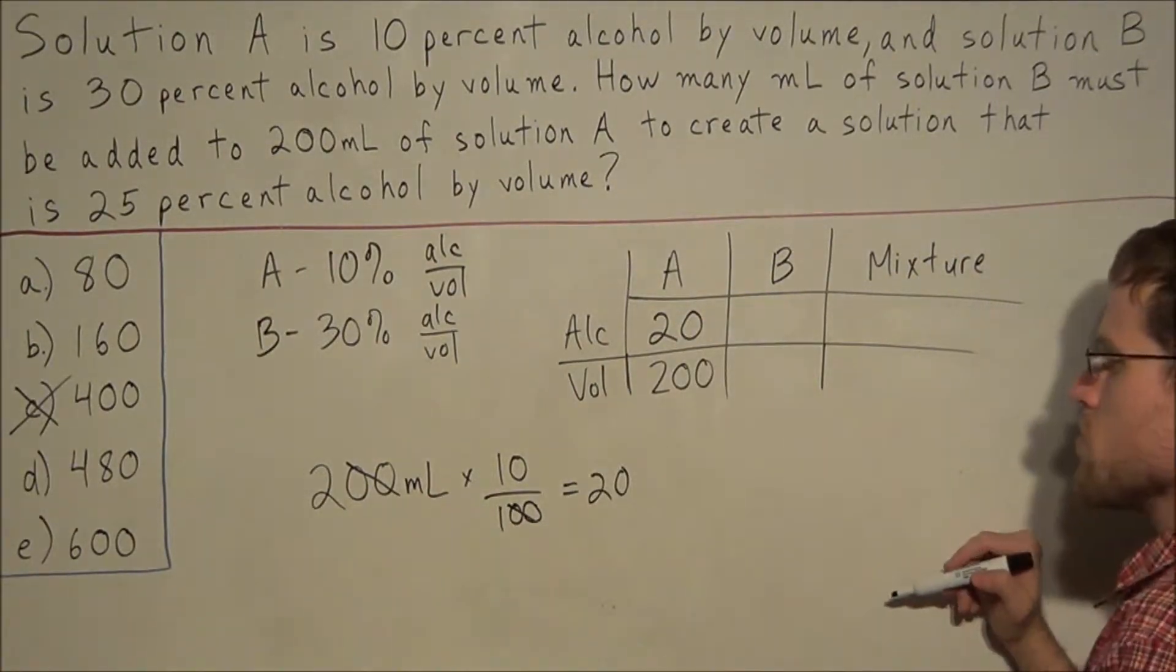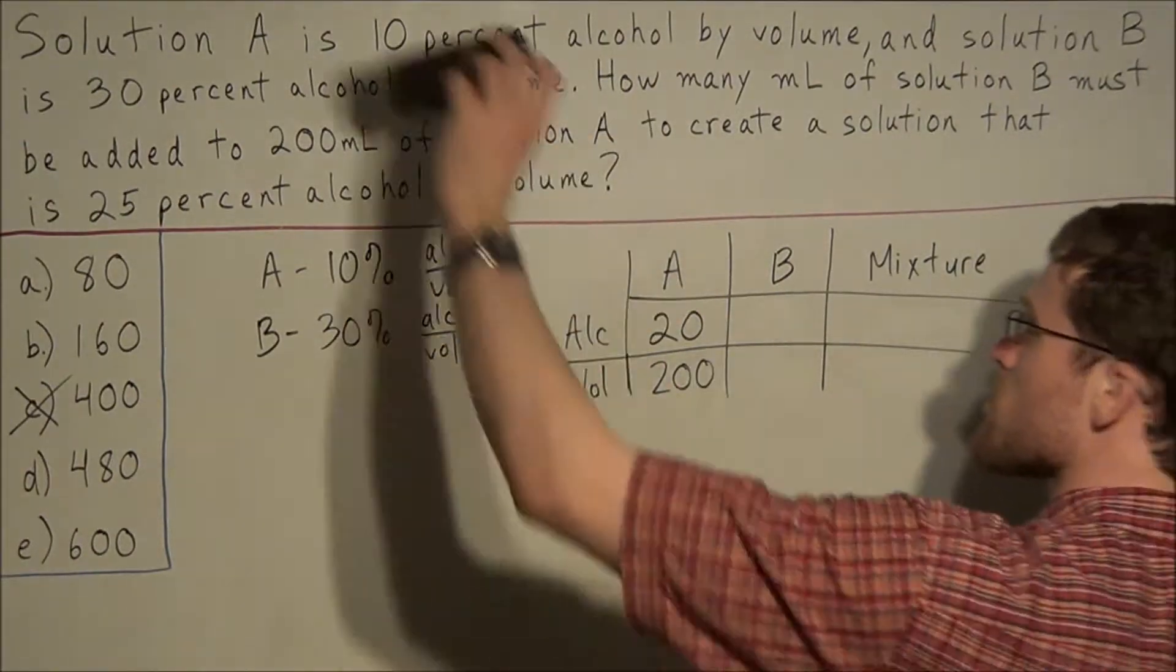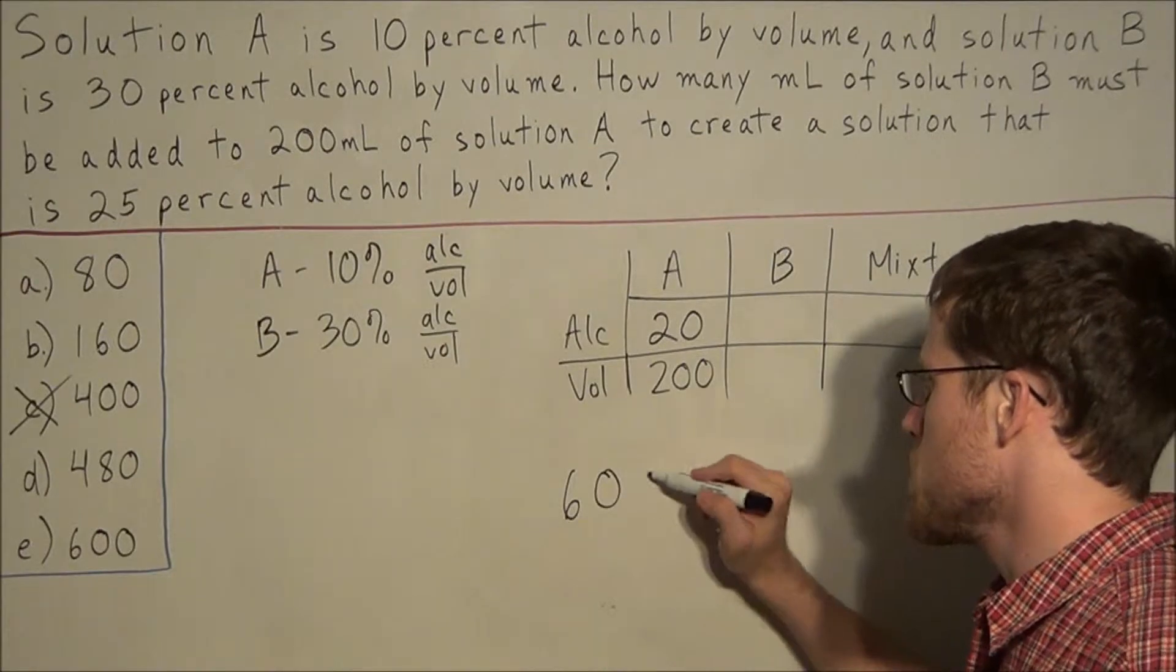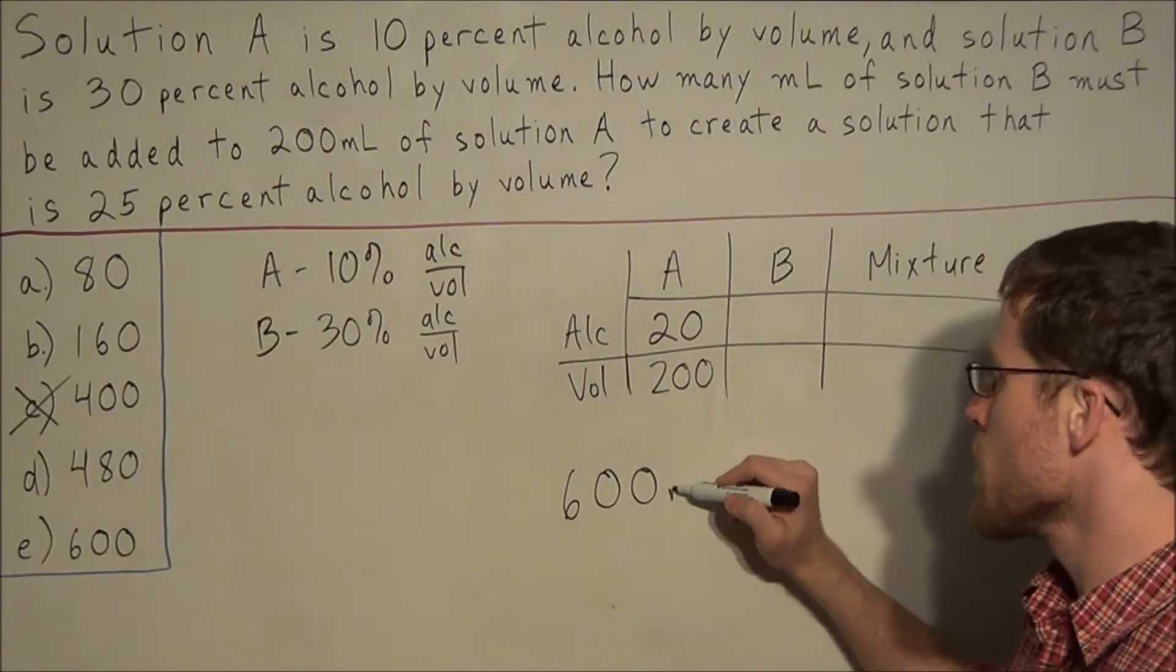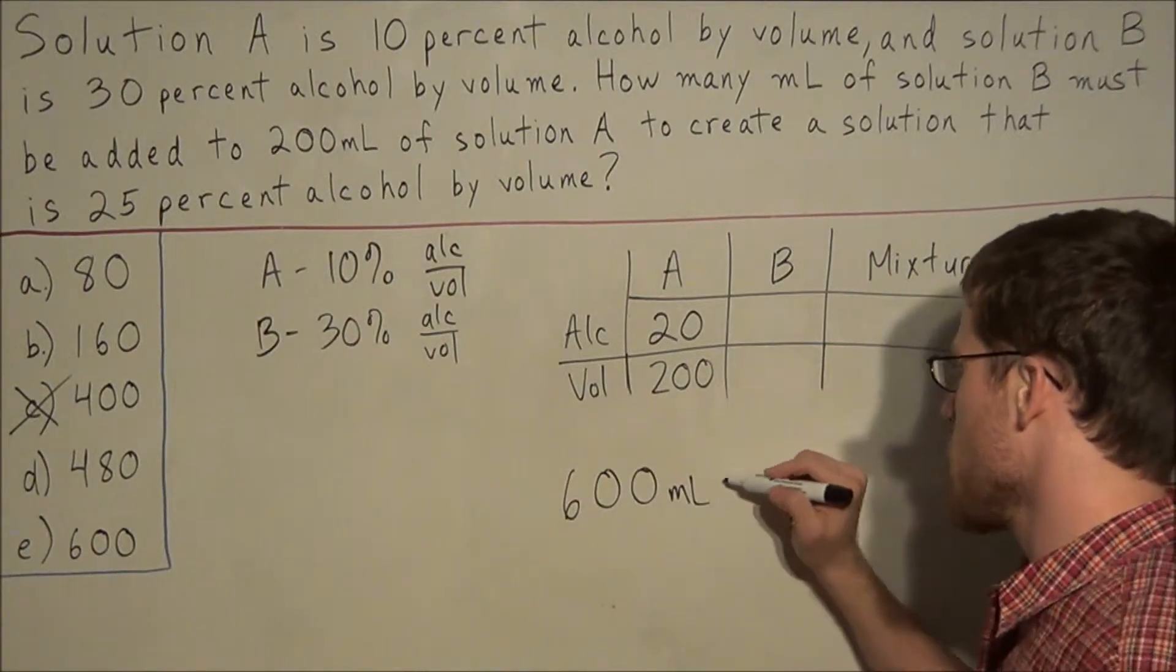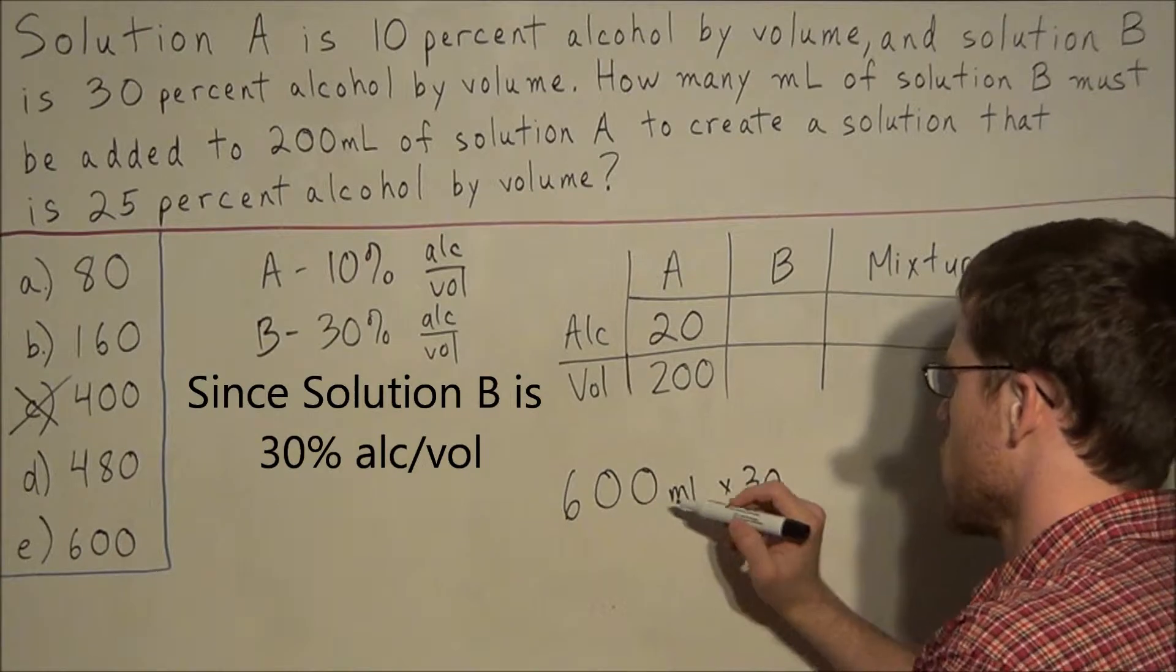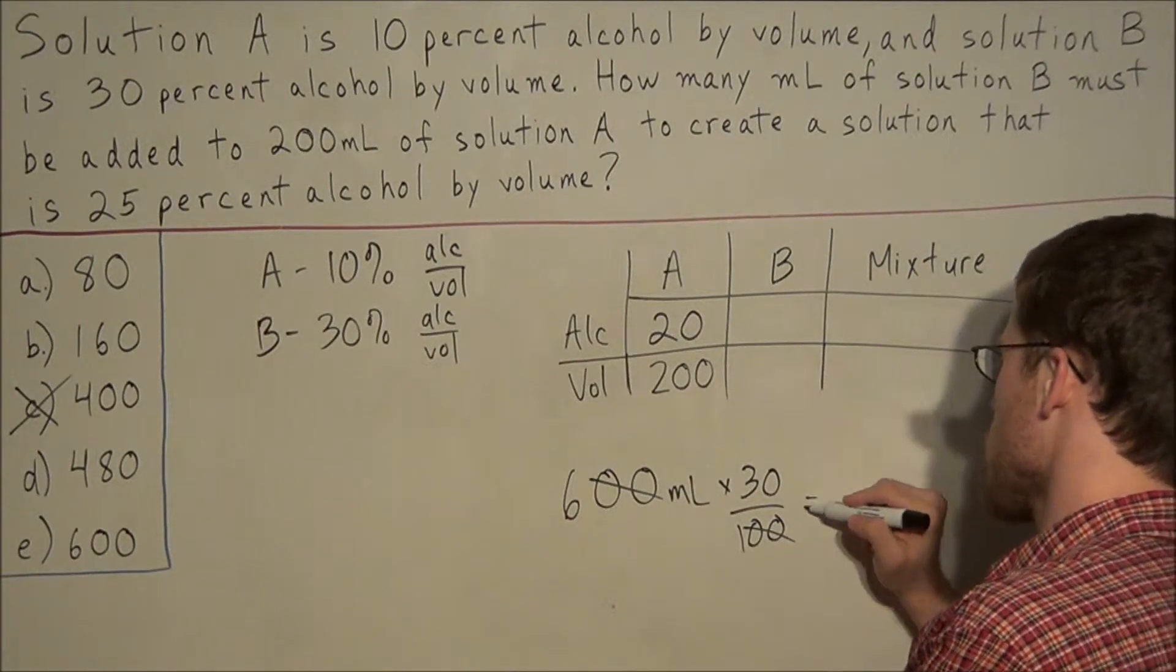So let's just assume by chance we had picked the right solution. That is, let's say we selected choice E. We claim that there is 600 milliliters of solution B. So then we would once again find 30% of this quantity. So we would multiply by 30 over 100.